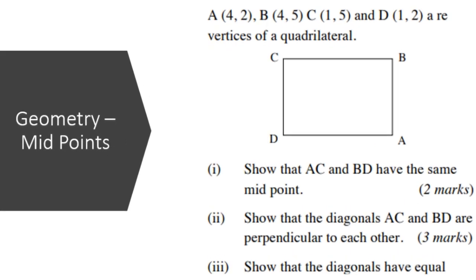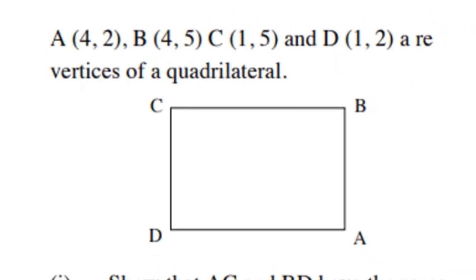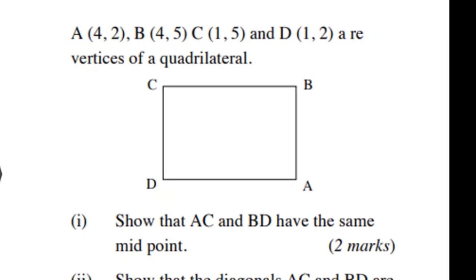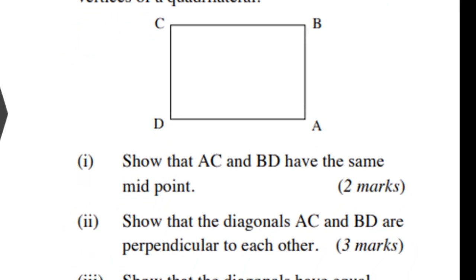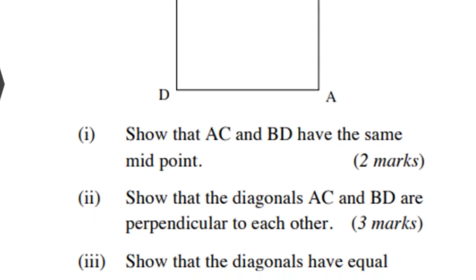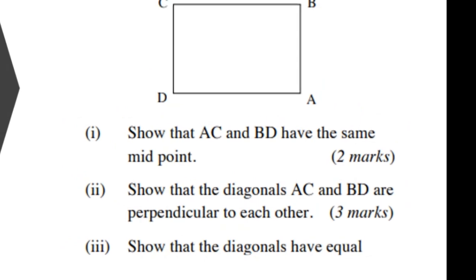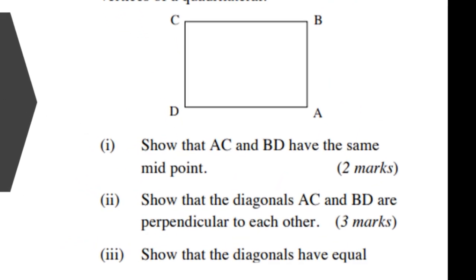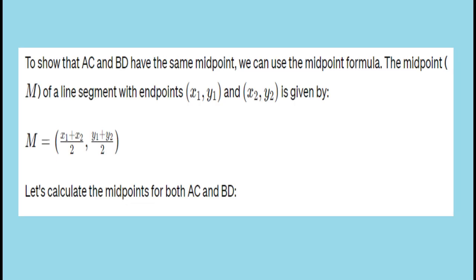This question refers to the diagram of a rectangle. The quadrilateral has the vertices A(4,2), B(4,5), C(1,5), and D(1,2). The questions are: show that AC and BD have the same midpoint; show that the diagonals AC and BD are perpendicular to each other; show that the diagonals have equal lengths.